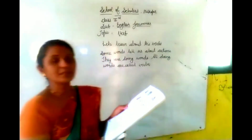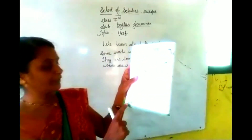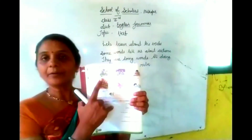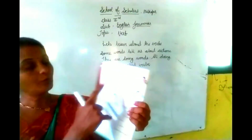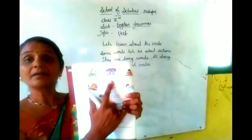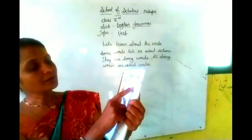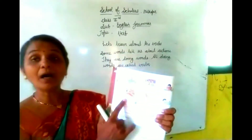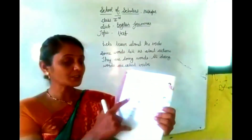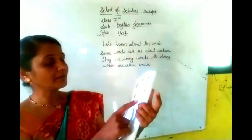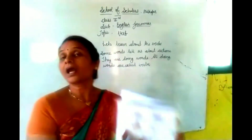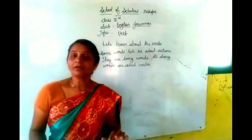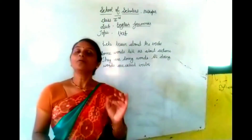This is the textbook. See page number 14. Here: first, play — play is an action. Then dance — dance is an action. Then eat — eat is an action. Then buy — buy is an action. Fly — fly is an action. And then swim — swim is an action. So all the action words are called verbs.